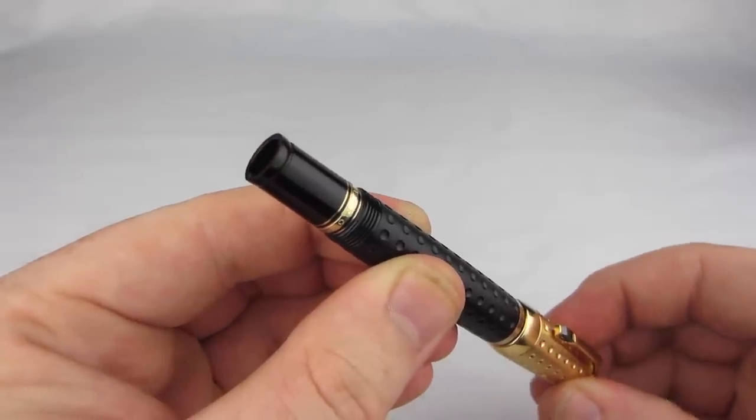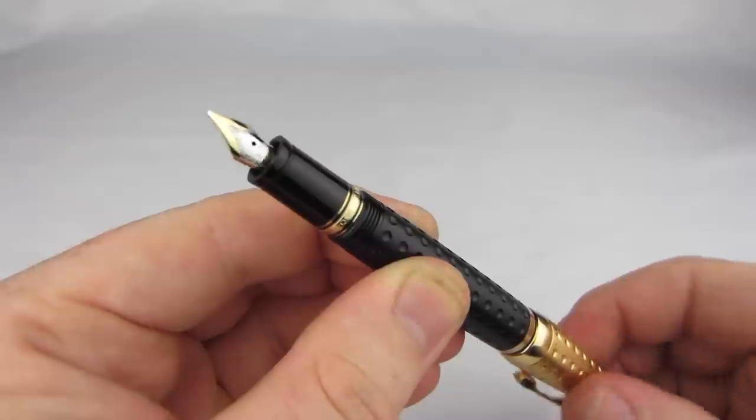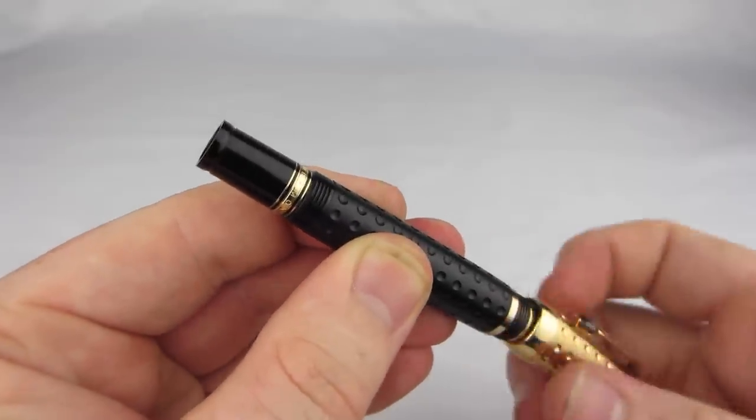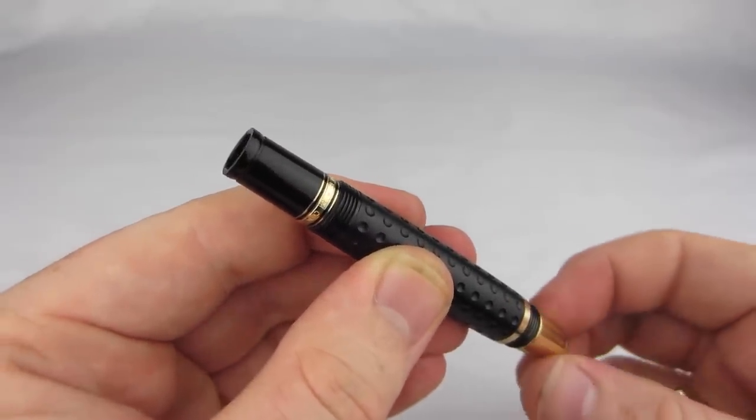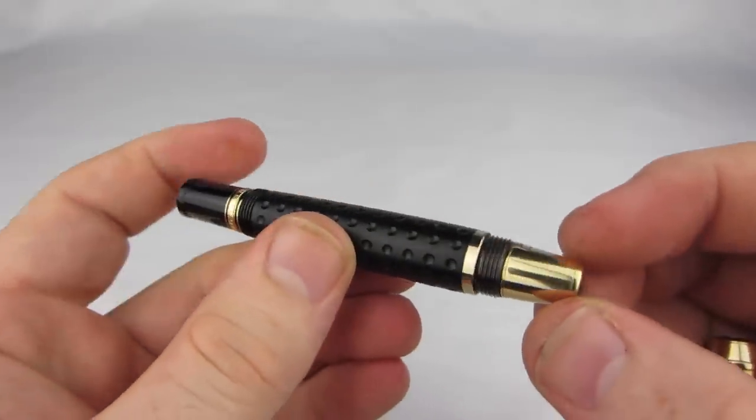The entire unit slides so smoothly in and out of the pen, you would think it was on greased ball bearings. Then, near the end of the stroke when extending the nib, you feel the resistance increase and suddenly release, like there's a detent that locks the nib in the extended position.